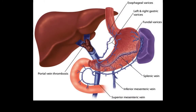In this diagram we see a thrombus in the portal vein. The portal vein drains blood from GI organs and the spleen to the liver. The liver then establishes metabolism and drains its blood to systemic veins via the hepatic vein.